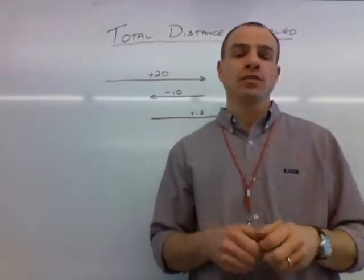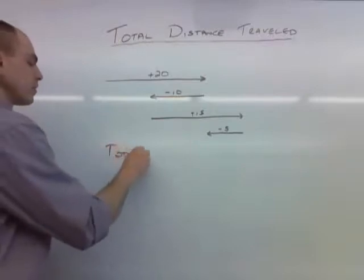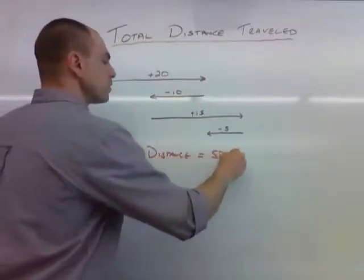plus another 5 gives us a grand total of 50 meters that we travel. That's the total distance that we travel. So let's put that down. Total distance, that's 50 meters.